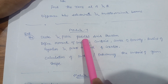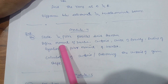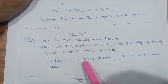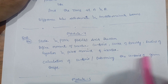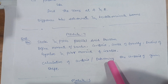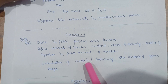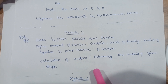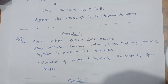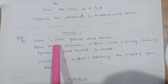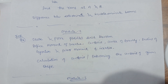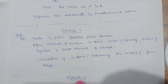In Module 4, the super important question is: state and prove the parallel axis theorem. Also cover definitions of moment of inertia, centroid, center of gravity, radius of gyration, and polar moment of inertia. Practice determining the centroid of given shapes such as I-sections, semicircles, and irregular shapes. Refer to the Sun Star textbook for this module. The parallel axis theorem question is definite — don't miss it.